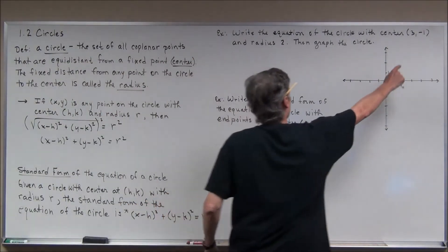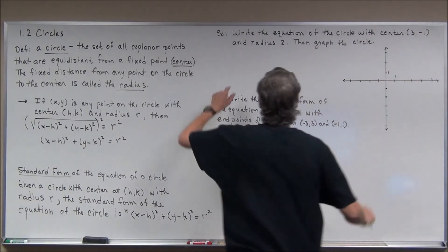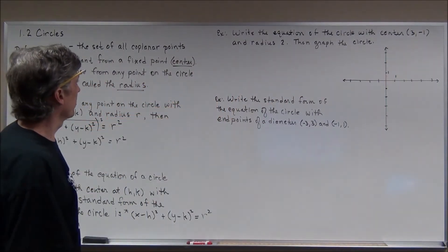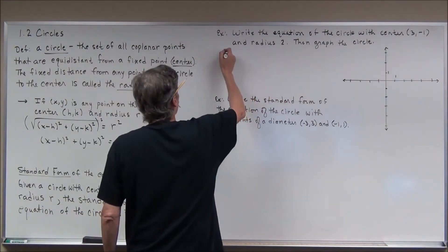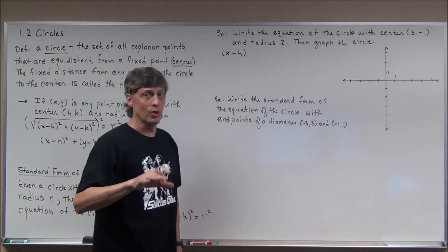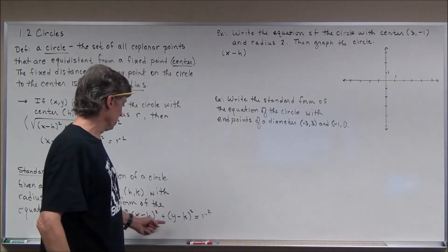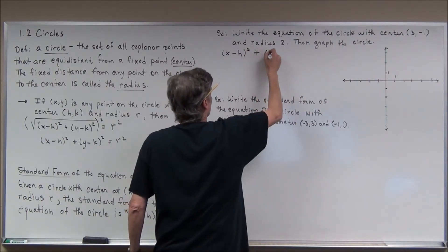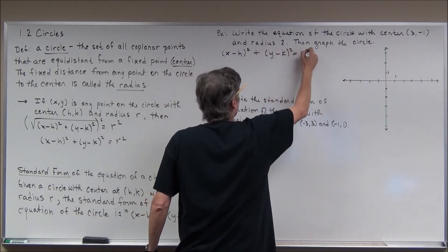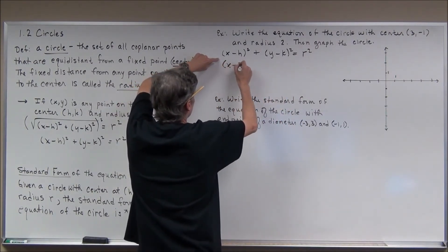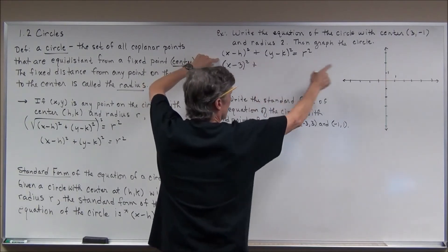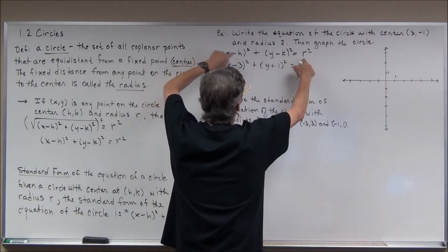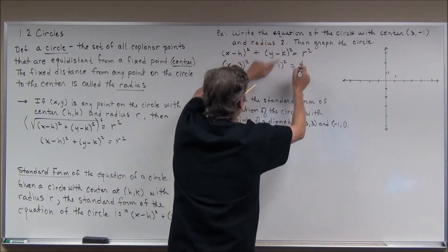For the first example: write the equation of a circle with center (3, -1) — this is my center (h, k) — and radius 2, this is my r. I'll use the standard form, sometimes called the center-radius form, since they give me the center and the radius directly. Substituting: h is 3, so (x minus 3) squared; k is -1, so minus negative 1 gives (y plus 1) squared; equals 2 squared, or 4. That is my equation in standard form.